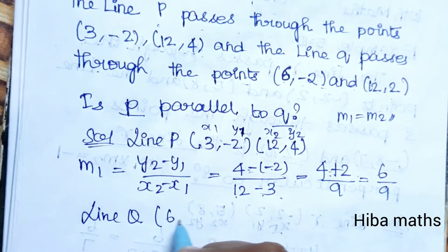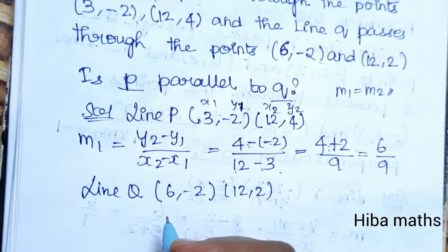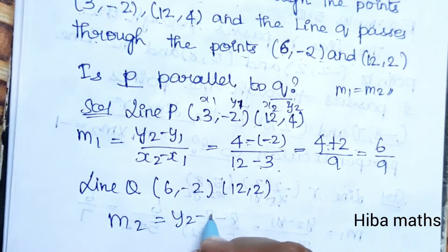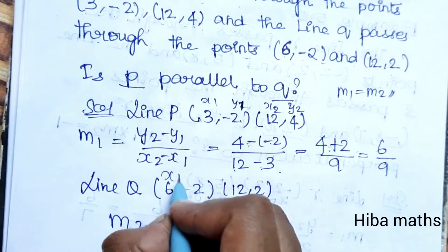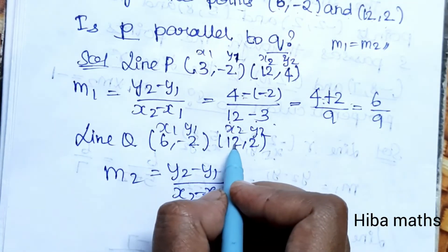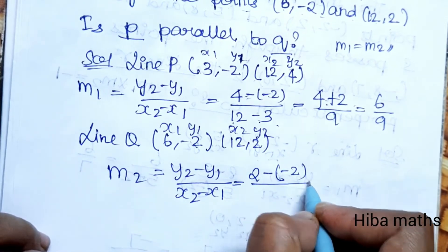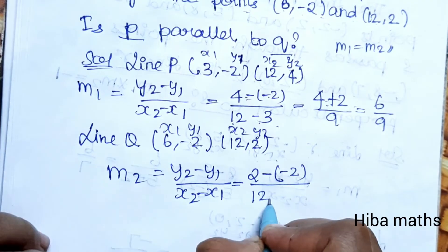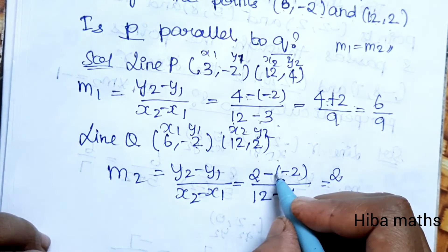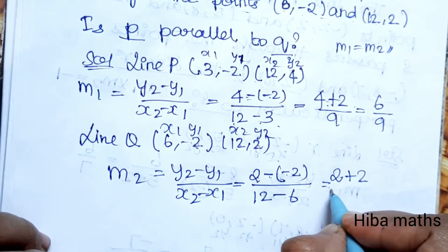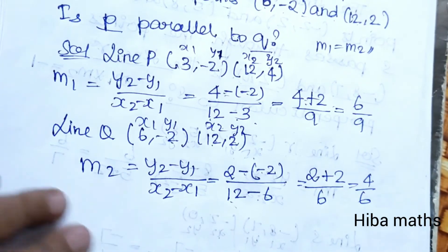For line Q, passing through (6, -2) and (12, 2), we calculate M2 using (Y2 - Y1) / (X2 - X1). That gives us (2 - (-2)) / (12 - 6) = (2 + 2) / 6 = 4/6.